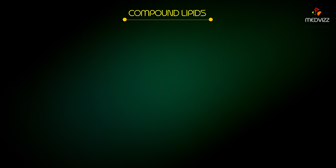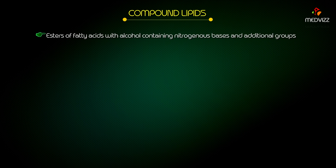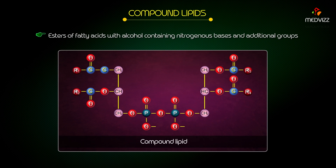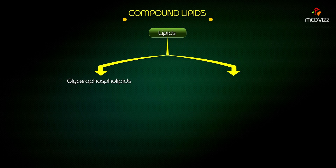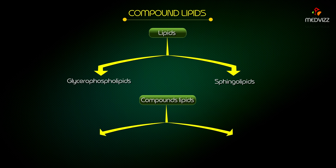Compound lipids. They are esters of fatty acids with alcohol containing nitrogenous bases and additional groups. Based on alcohol compounds, lipids are subdivided into glycerophospholipids and sphingolipids. Compound lipids are also divided into phospholipids and glycolipids.